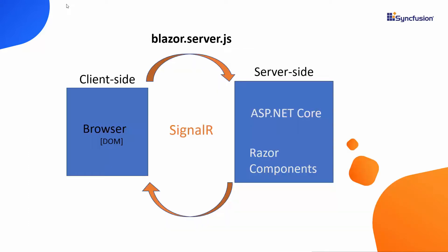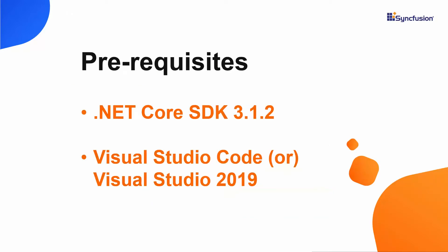Now let me begin to create my first server-side Blazor app. For that I should have the .NET Core SDK on my machine, and next I should have either Visual Studio Code or Visual Studio 2019 installed. In this video I'll first show you how to create a Blazor server app using Visual Studio 2019, and at the later part I will also show you the same application creation process using Visual Studio Code.